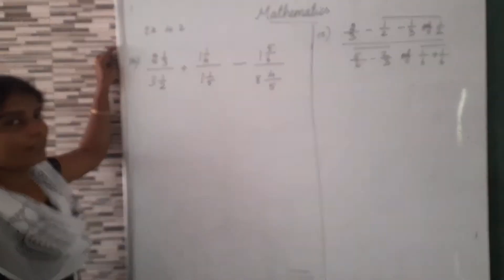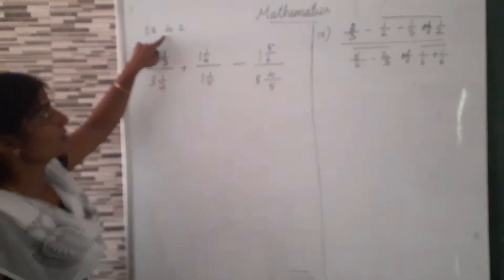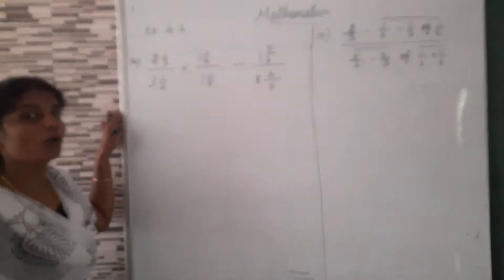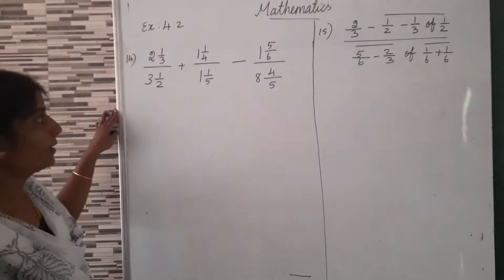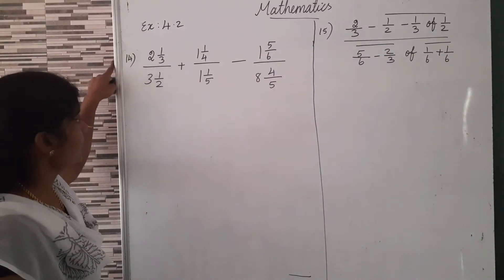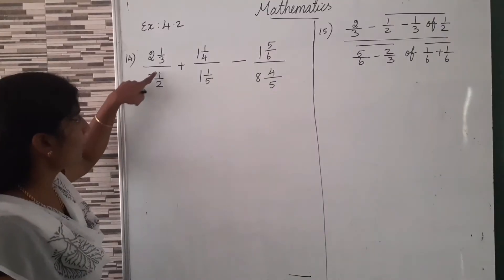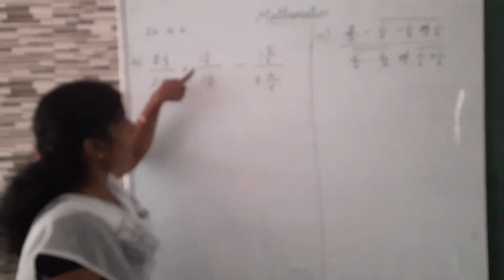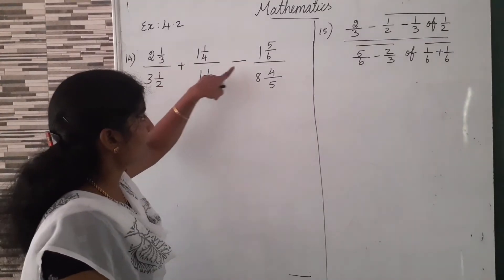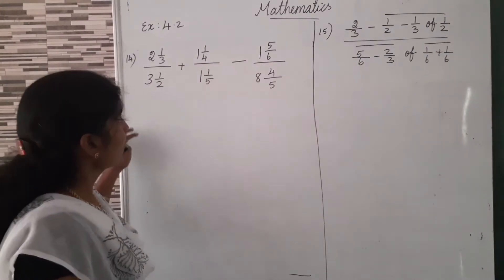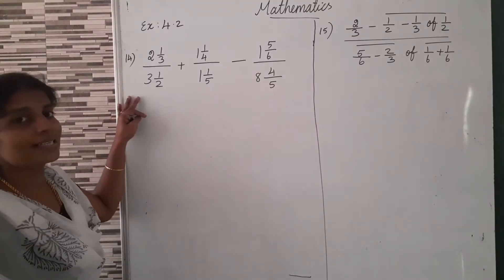Let's start our math class. Today also we are going to use the BODMAS rule and simplify some problems. Now we can continue Exercise 4.2. Today also we can use the BODMAS rule. Exercise 4.2, Question number 14: 2 and 1/3 divided by 3 and 1/2 plus 1 and 1/4 divided by 1 and 1/5, minus 1 and 5/6 divided by 8 and 4/5. Here we have mixed fractions.